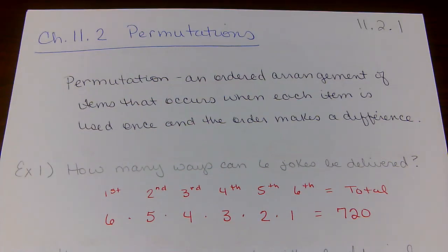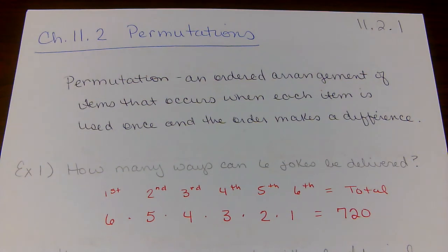In the last video, we talked about the counting principle, which is basically counting how many ways objects can be arranged. In the next two videos, we'll be talking about specific types of arrangements that are often confused. Make sure that you watch these videos as many times as you need to understand the differences between permutations, combinations, and the counting principle.